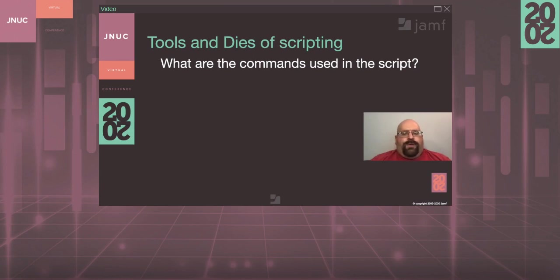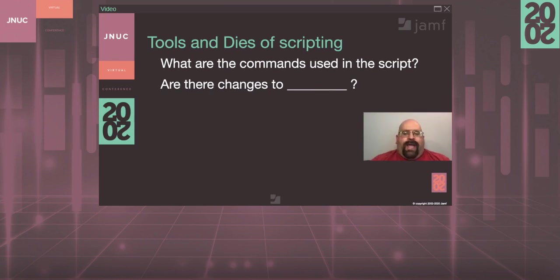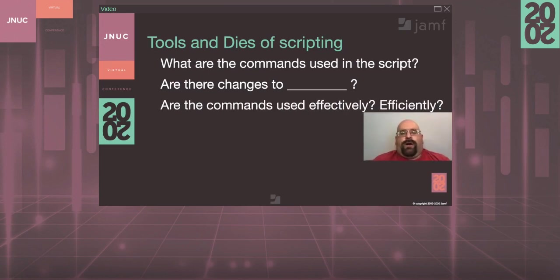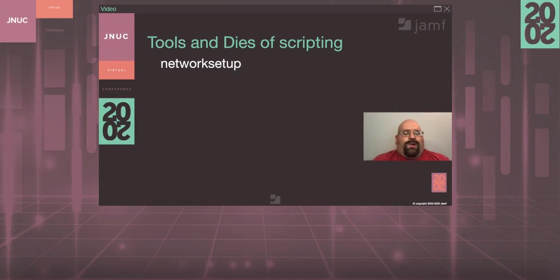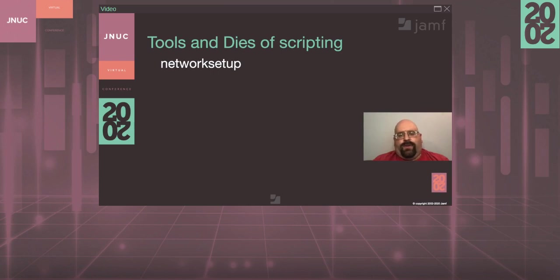Knowing what commands your script uses is extremely important. You also need to know if there were changes to the command — did it move? Is it still available? Has the command been deprecated? Did it add new verbs? Is it backwards compatible? Once you know that information, we have to ask: are we using those commands effectively and efficiently? I once wrote an extension attribute that used networksetup, and it worked great on all of our 10.9 computers. But anything running macOS 10.6 started submitting a record into our users labeled as 'no name.' By the time we figured out the problem, we had added over 1,000 no-name user records into our Jamf Pro.